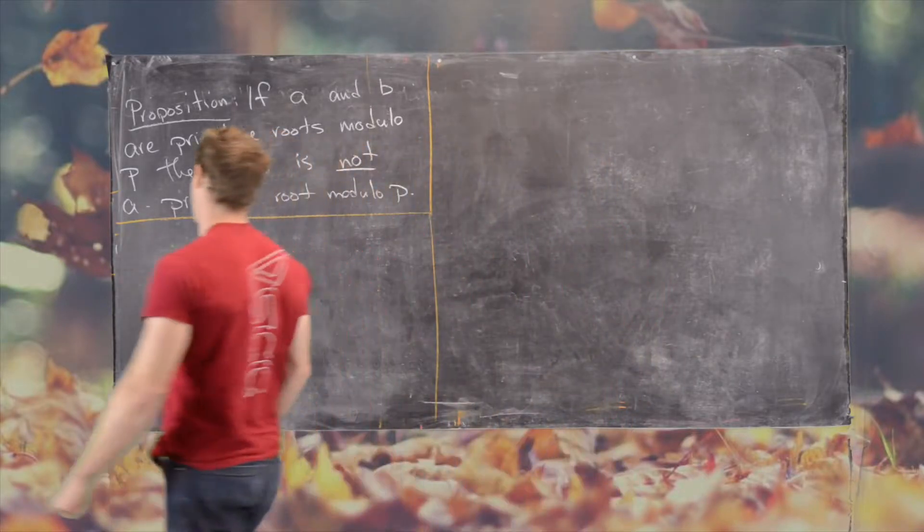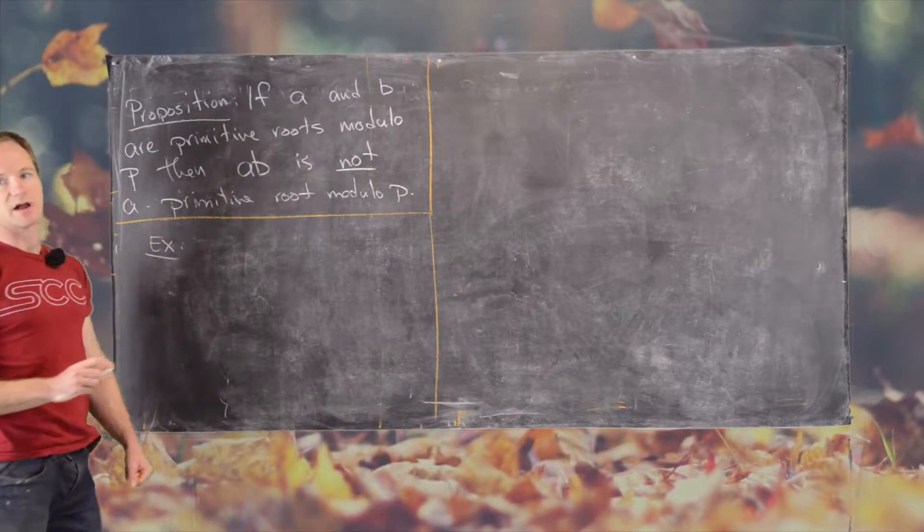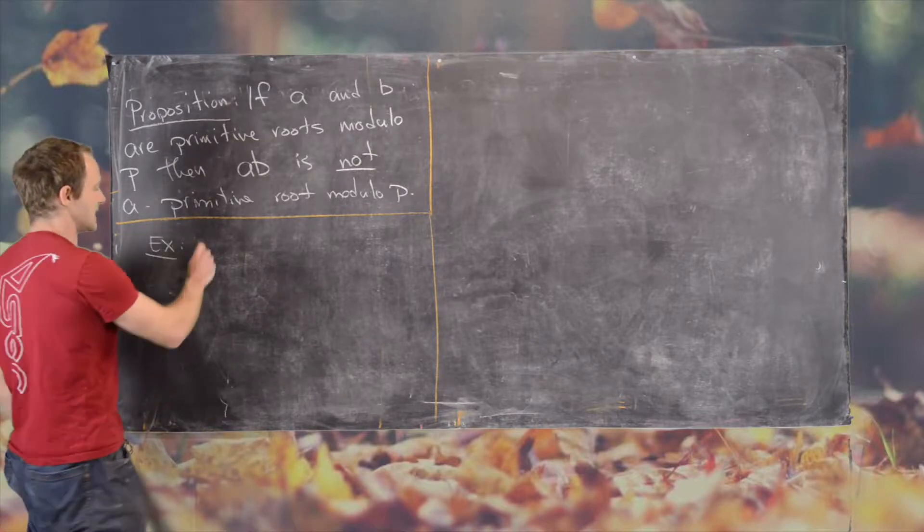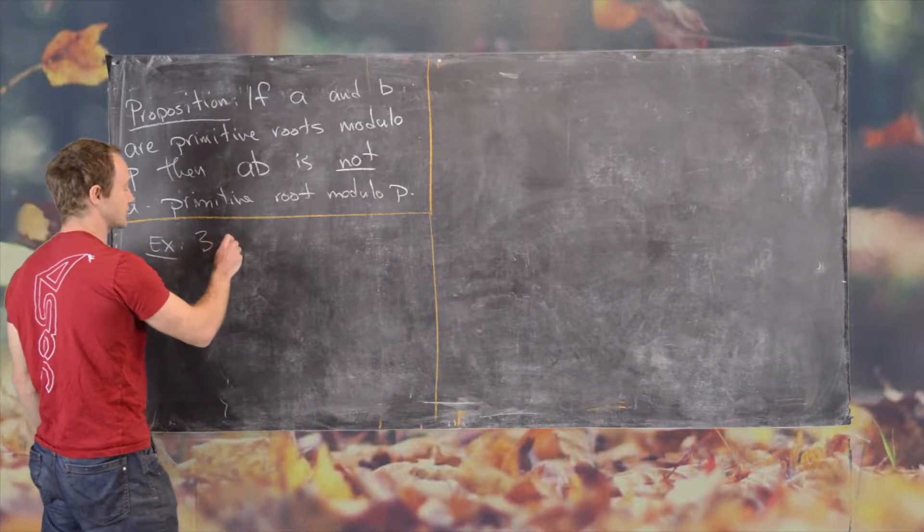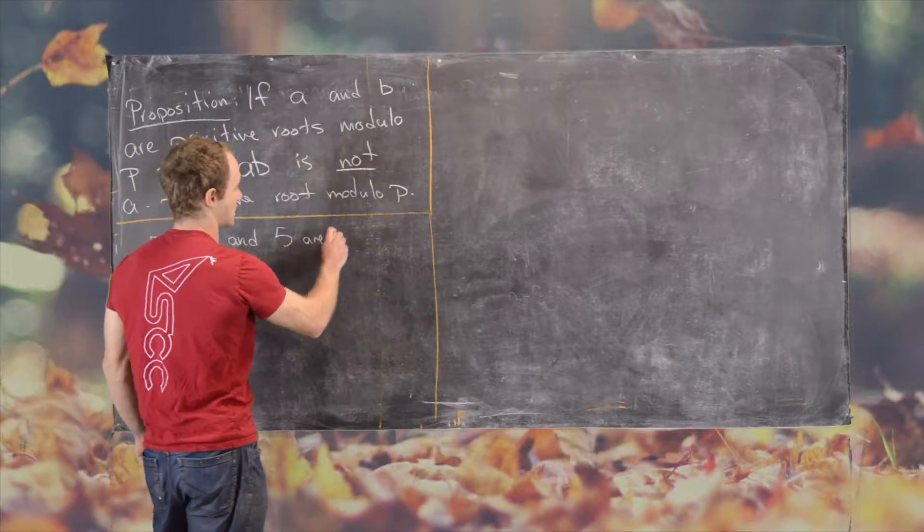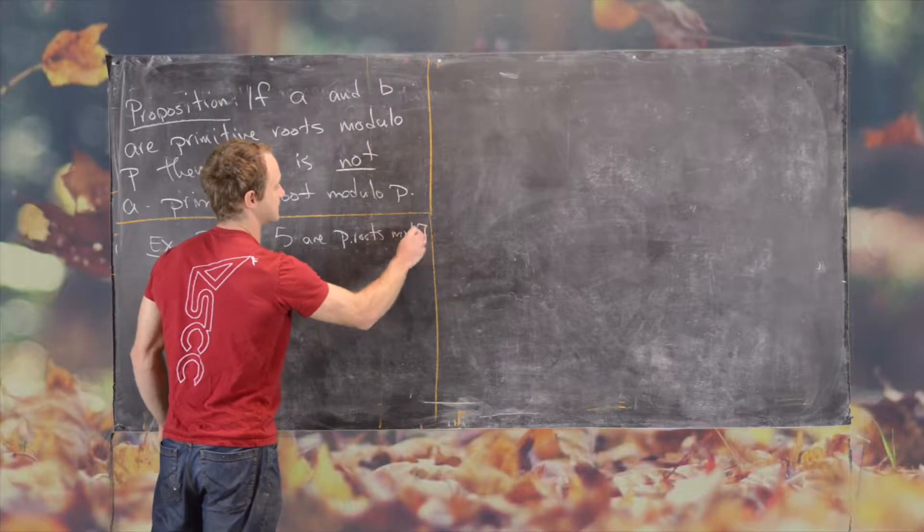So we're going to look at a pretty simple example of this before we prove this statement, but I urge you to find a more interesting example. And that is if 3 and 5 are primitive roots mod 7.